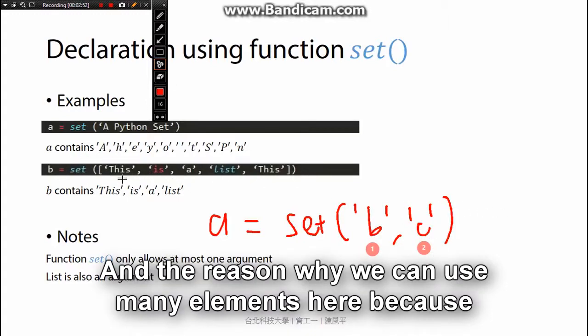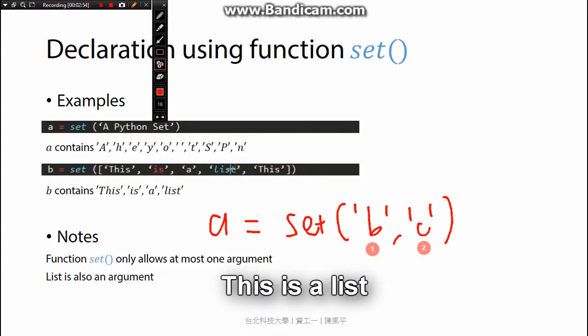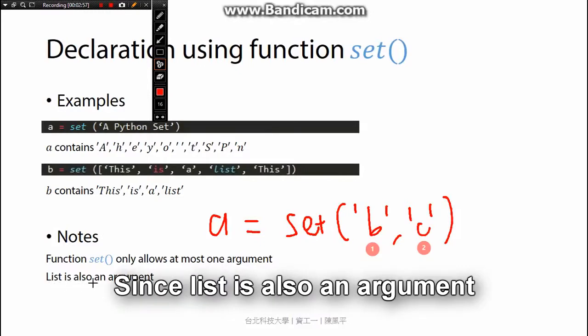And the reason why we can use many elements here, because this is a list. Because the list is also an argument.